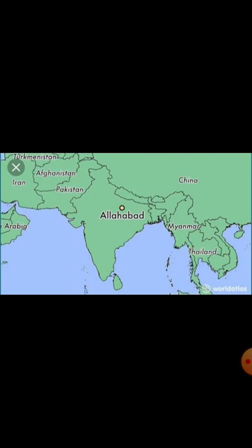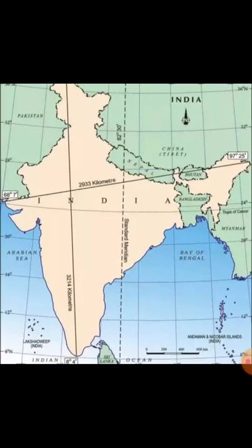The 82 degrees 30 minutes East meridian passes through Allahabad in India. This meridian was chosen because it passes through more or less the central part of India.